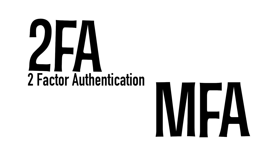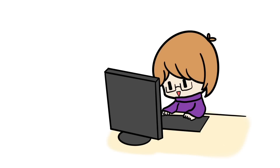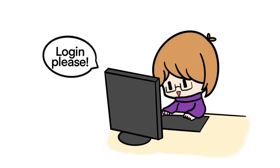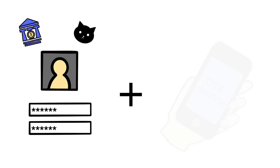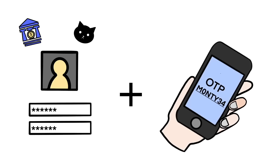2FA and MFA stand for two-factor authentication and multi-factor authentication respectively. A service that uses 2FA will basically ask you to provide two different passwords instead of the usual one. The first password is usually the same password you use for both your bank account and your cat meme website. The second password is a one-time password — an OTP — that's generated by a machine or server and is different every single time.